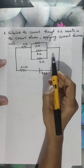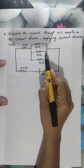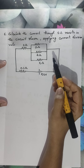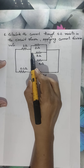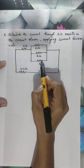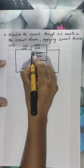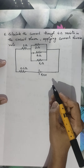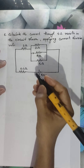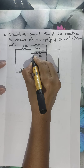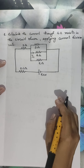Calculate the current through the 4 ohm resistor in the circuit shown, applying the current division rule. There is a 4 ohm resistor in this parallel combination and we have to calculate the current through it. Let us mark this current as I1, and we have to calculate I1.